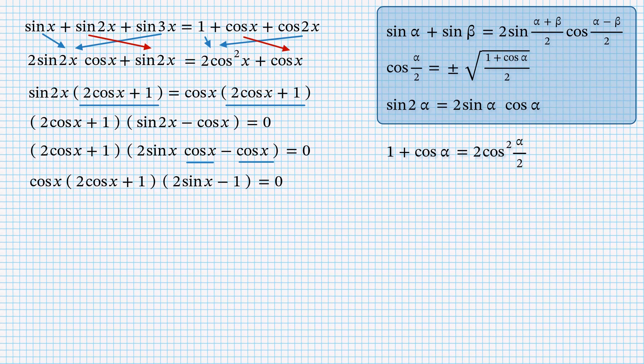Now all the factors are as simple as we can imagine, so as usually we equate each factor to zero and get three possible equations for x. Note that these equations are mutually exclusive. They never clash. Indeed, if cosine is zero, it cannot be also equal to negative half. While if sine is equal to half, the absolute value of cosine must be equal to square root of 3 over 2. Therefore, the cosine may be neither zero nor negative half. This means that we have three non-clashing sets of x.